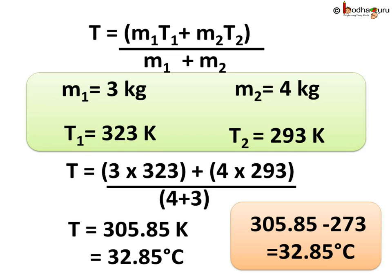So if we subtract 273 from 305.85, we get the temperature in degrees Celsius, and this equals 32.85 degrees Celsius.